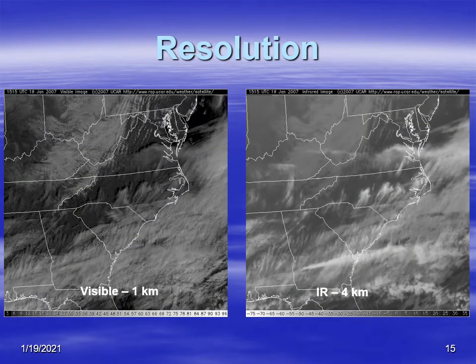If you look at satellite imagery, satellite imagery also has resolution. Visible satellite imagery — at least the old visible satellite imagery — had a resolution of one kilometer, meaning that's the smallest thing that can be seen. Whereas infrared imagery has a resolution of four kilometers, meaning the smallest cloud that can be seen with an infrared satellite image has to be bigger than four kilometers across.